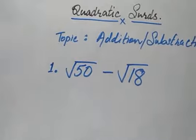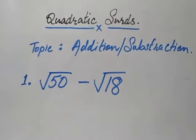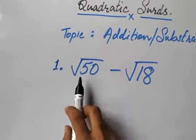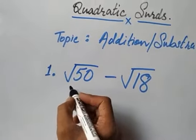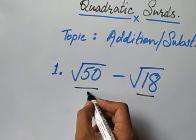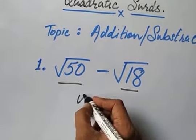So we are going to learn how we will add or subtract quadratic surds. When you look at these two surds, you will realize that this is 50 and this is 18. Since they are different, they are unlike terms.